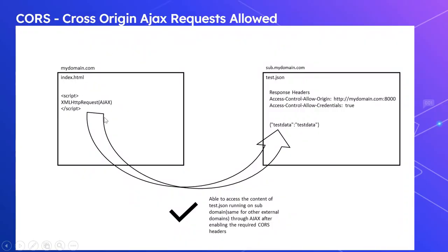Now for the same scenario but this time enabling CORS headers. If you see here: Access-Control-Allow-Origin is set to http://mydomain.com with the port number, which enables the cross-origin request from index.html since it runs under mydomain.com. You can also specify star, but I want to restrict it to this specific origin. Also, Access-Control-Allow-Credentials is set to true because in index.html I am using withCredentials = true on the XMLHttpRequest - when you use that option this header must be true.